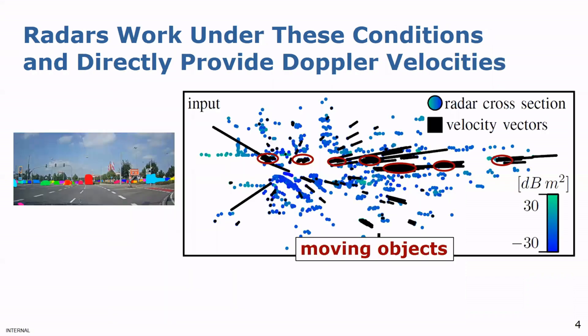Additionally, radar sensors directly provide the Doppler velocities and the radar cross-section, which both can help to differentiate between moving agents and classify them. A serious drawback, however, is that the radar sensors are largely affected by noise, as indicated by all the measurements with Doppler velocities besides the actual objects.